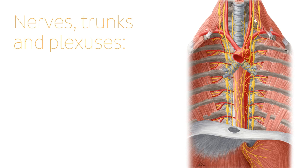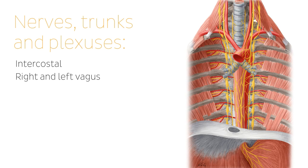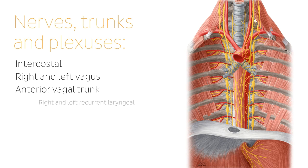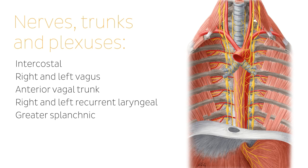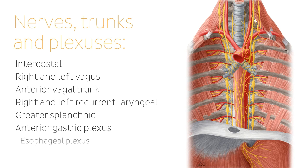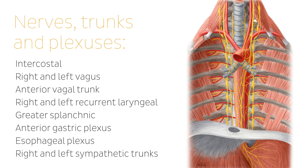Before I go into detail, I'm going to list them. They include the intercostal nerves, the right and left vagus nerves, the anterior vagal trunk, the right and left recurrent laryngeal nerves, the greater splanchnic nerve, the anterior gastric plexus, the esophageal plexus, and the right and left sympathetic trunks.